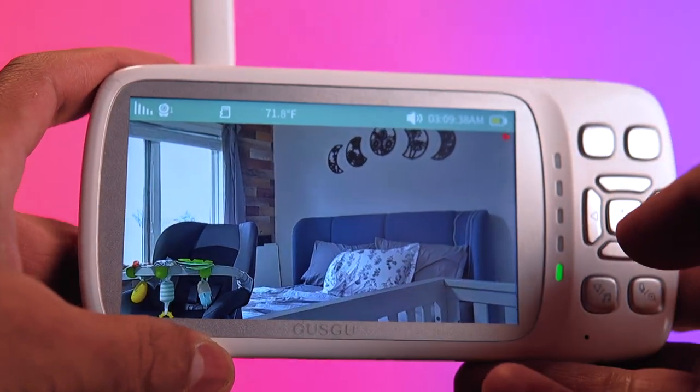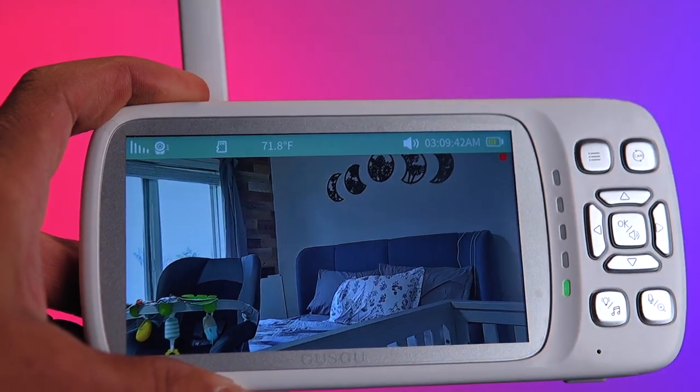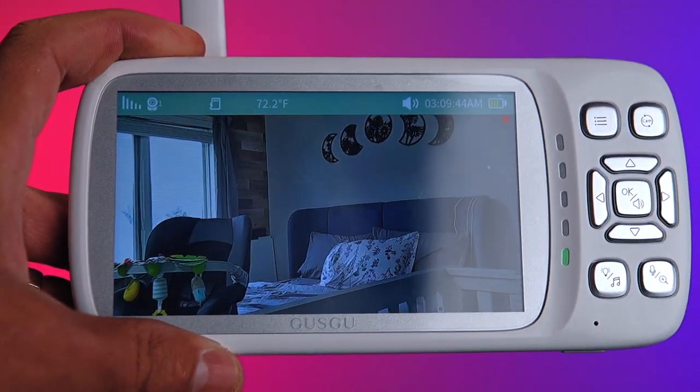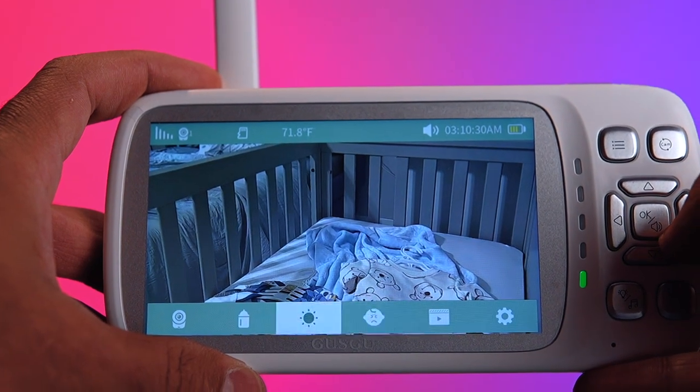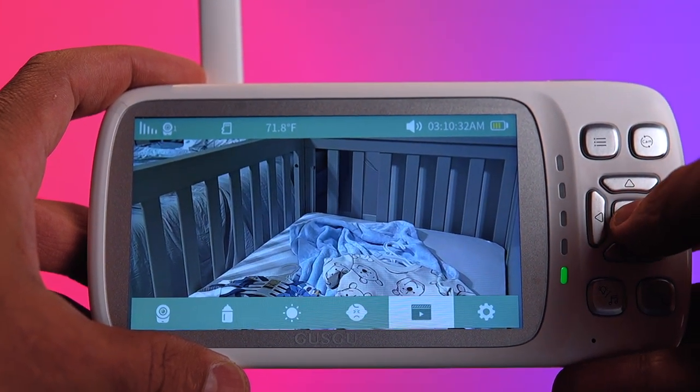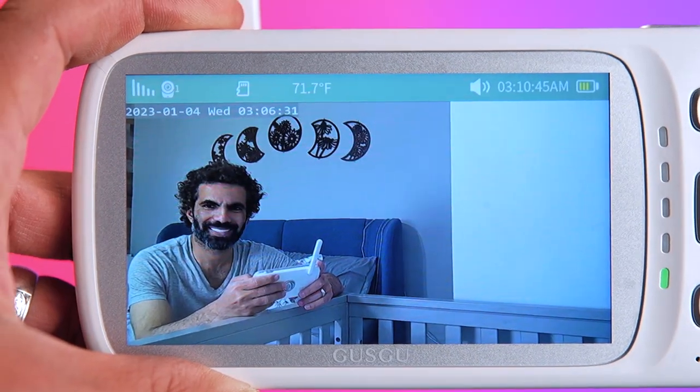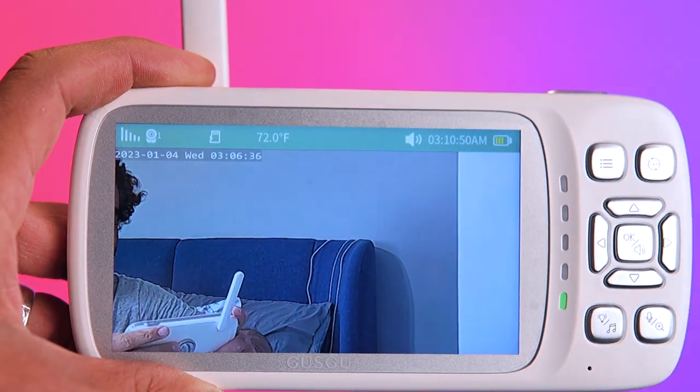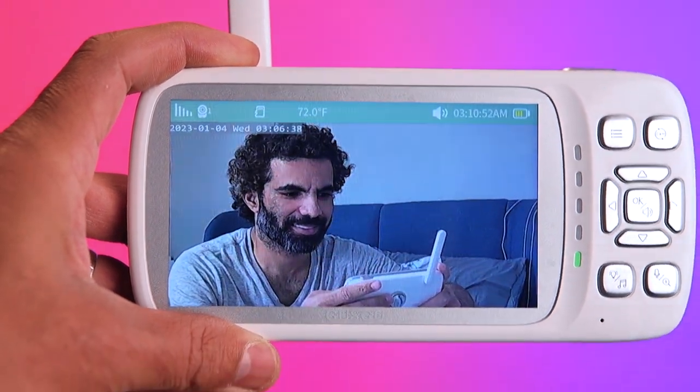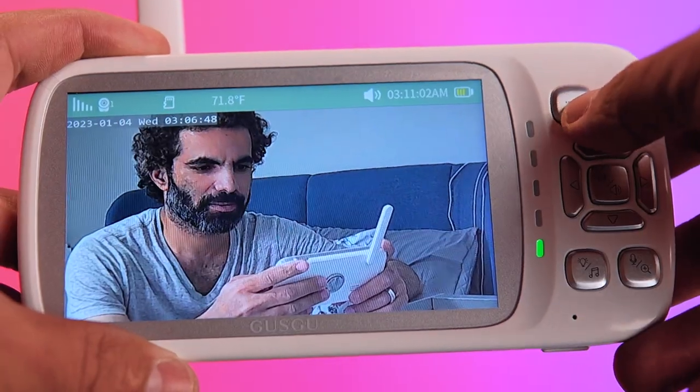But what about those little extras that make all the difference? Well, the Guzgu Long Range Baby monitor has those covered too. With its DIY Music and Stories feature, we can download custom audio files directly to the camera, so we can play our little one's favorite lullabies and bedtime stories whenever he needs them most. And let's not forget about the wider monitoring range and adjustable color nightlights, features that ensure we're always connected with our baby day or night while creating a soothing sleep environment that promotes his well-being.